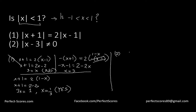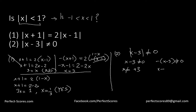Statement 2 says absolute value of (x − 3) is not equal to 0. Breaking the absolute value gives x − 3 ≠ 0 and −(x − 3) ≠ 0, both of which simply mean x ≠ 3. Does that tell us whether x is between −1 and 1? No — x could be in that range or not. Statement 2 alone is insufficient.